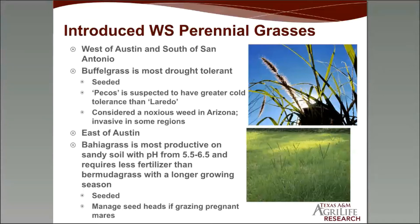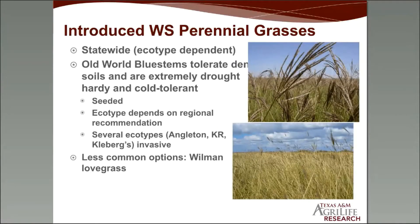East of Austin, bahiagrass is an excellent option. There are several excellent cultivar options — it's most productive on sandy soil with a pH from about 5.5 to 6.5, requires less fertilizer than bermudagrass, and has a slightly longer growing season. Bahiagrass is seeded, and you want to manage seed heads if grazing pregnant mares — an endophyte can cause toxicity issues.